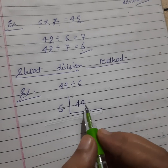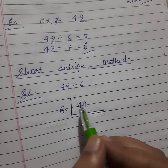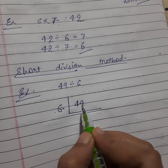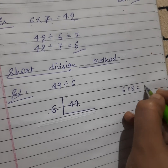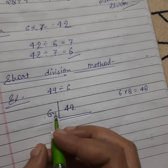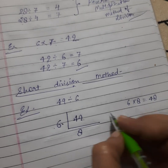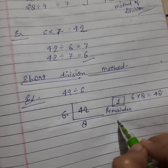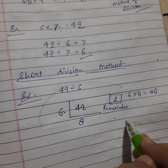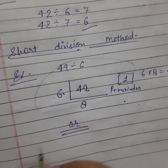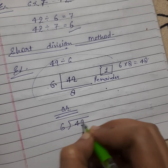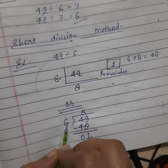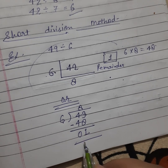Now, in the table of six, how many times does forty-nine come? If we read the table, forty-nine doesn't come in the table of six. So we take the nearest number less than forty-nine — that is six eights are forty-eight. The remainder is forty-nine minus forty-eight, which equals one. Simply: write forty-nine, six eights are forty-eight, subtract — nine minus eight is one, four minus four is zero. So six is our divisor, forty-nine is our dividend, eight is our quotient, and one is the remainder.